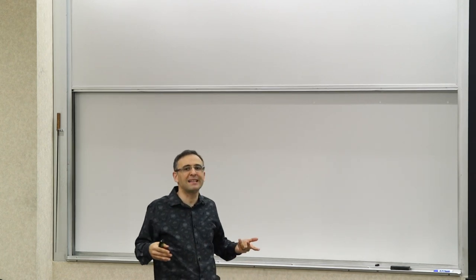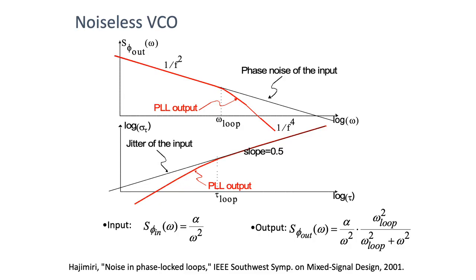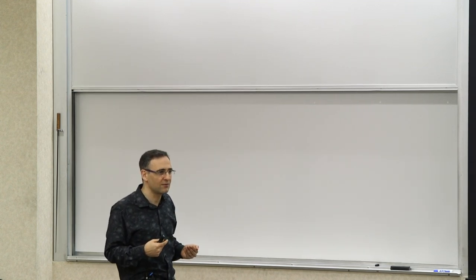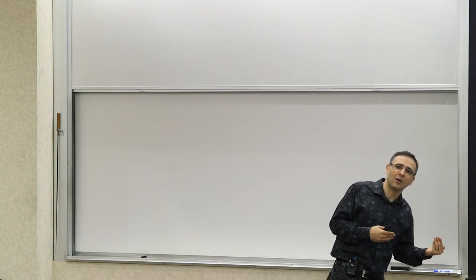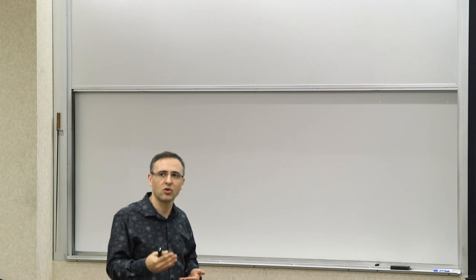Beyond the loop bandwidth, the loop simply cannot track the poor behavior of the input and gradually starts getting better in the frequency domain. In the time domain — looking at timing jitter — for fluctuations on time scales greater than the time constant of the loop, things will track. But for fluctuations on shorter time constants, the loop is not fast enough to force the output to track the input, and you start getting the better behavior of the noiseless VCO. We analyzed noise sources associated with VCO and input separately because the model is linear, so we can superpose the results.